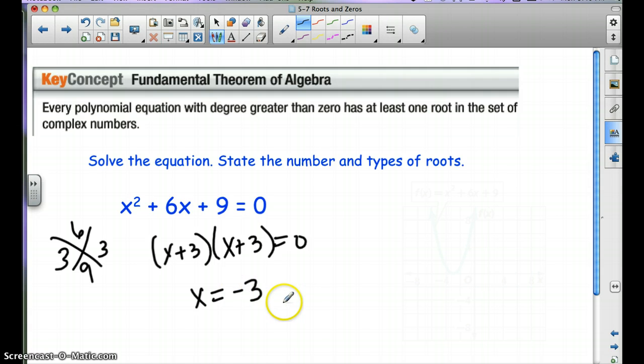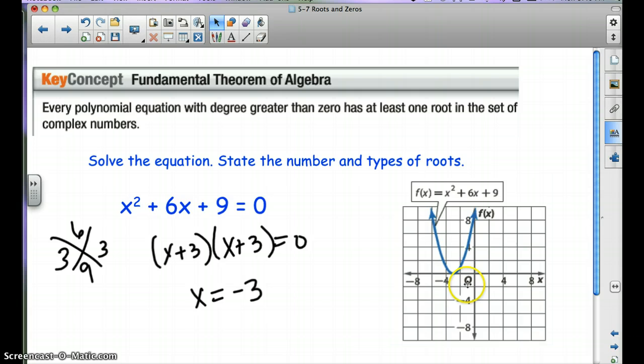So we get x equals negative 3. Now we get negative 3 twice, but do we have to write it twice? No. So if you notice here, here is the root. And notice we wanted to get this many roots or zeros.